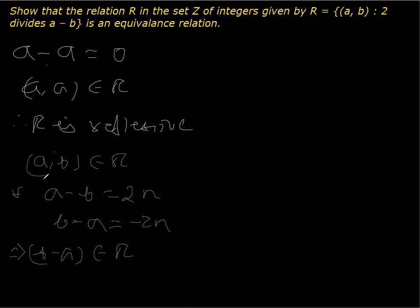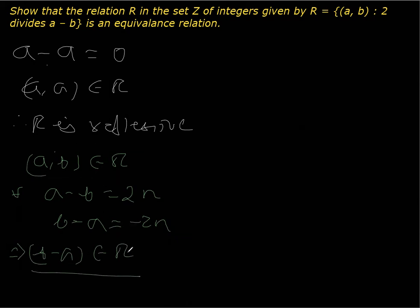So as you can see, I took (a, b) belonging to R, and as a result we also got (b, a) belonging to R. Therefore we say that R is symmetric.